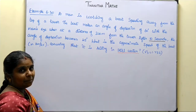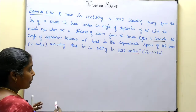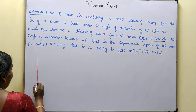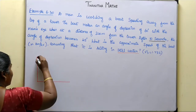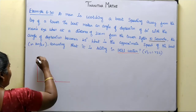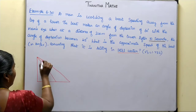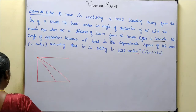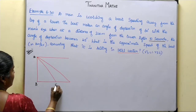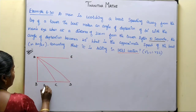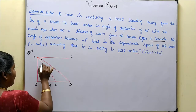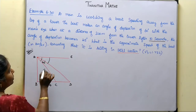We take the time as 10 seconds. The boat is 200 meters away from the tower — that distance is BC equals 200 meters. Let CD be the unknown distance traveled. The angle of depression EAD is 45 degrees, which implies angle ADB equals 45 degrees. After 10 seconds, the angle of depression becomes 45 degrees.